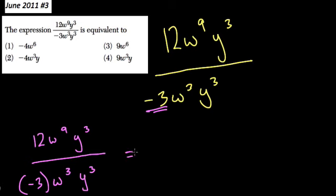Once I think about that, I have 12 over negative 3, that's just negative 4. Again, put it in parentheses.